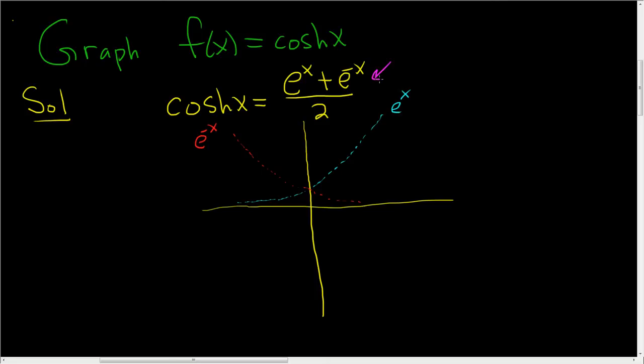it's the average of e to the x and e to the negative x. So it's the average of the y values. So for example, let's take this x value here. And if we look at this tiny little y value here, and this y value here, and we compute the average of those y values, maybe it's here.